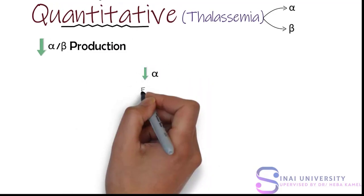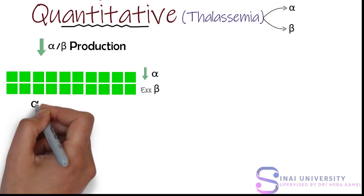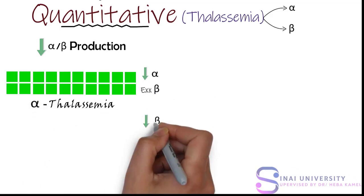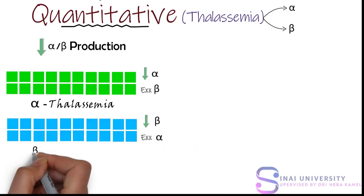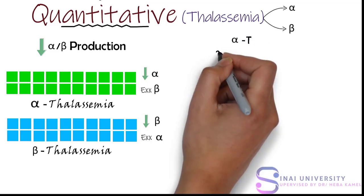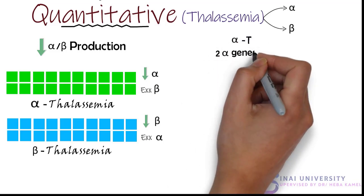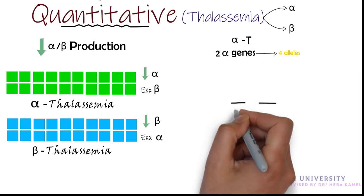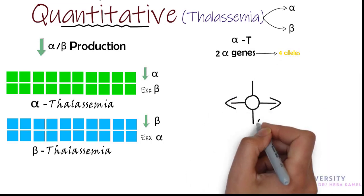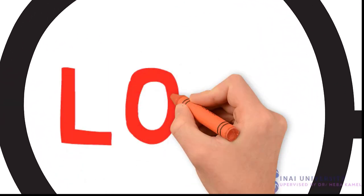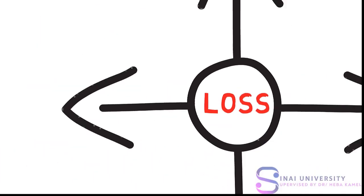If alpha production is decreased with excess beta subunit, it's called alpha thalassemia. If beta production is decreased with excess alpha subunit, it's called beta thalassemia. The alpha subunit is encoded by two genes, so each person has four alleles: two from mom and two from dad. Because of this, there are four variants of alpha thalassemia, ranging in severity from losing one to losing all.